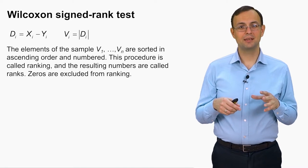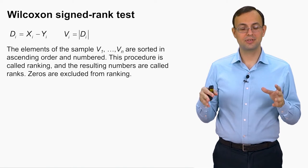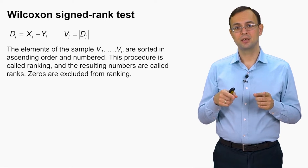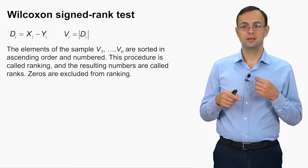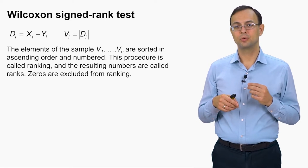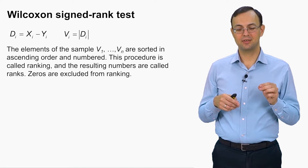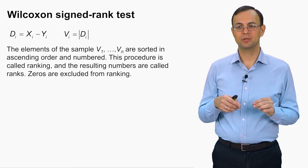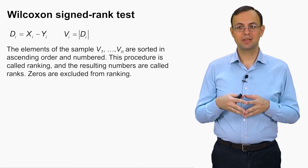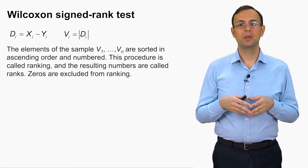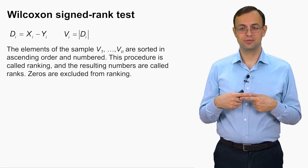So what is ranking? Ranking means that the sample is sorted in ascending order and numbered, from the least element to the greatest one. And these numbers are called ranks. So the least element gets rank 1, then the second least element gets rank 2 and so on. And the greatest one gets rank n. And zeros are excluded from this ranking. We are ranking only differences that are not equal to 0.